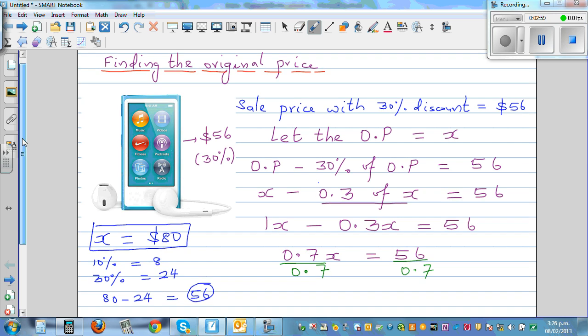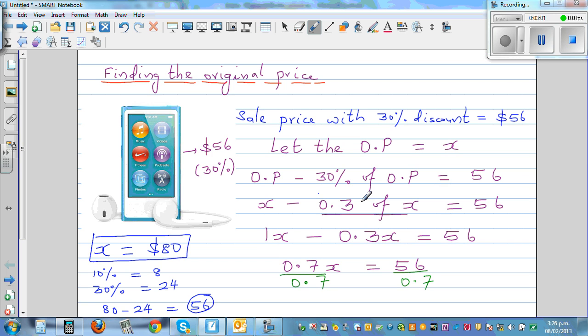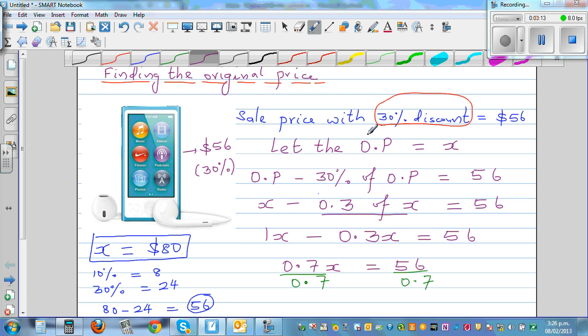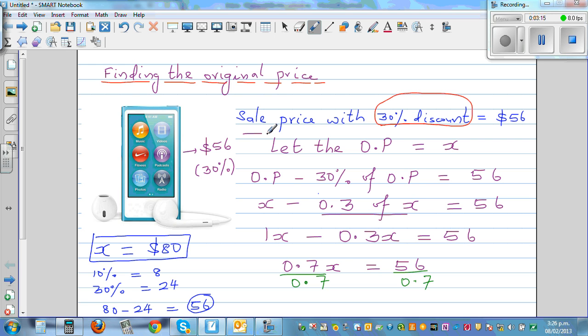So let's think in a different way. How can we do this in a different way? Now when you're seeing there's a discount of 30%, how much are you paying? In fact, this whole thing can be written as 70% of the original price of X can be written as $56. The same thing can be written as 70% of X is 56.